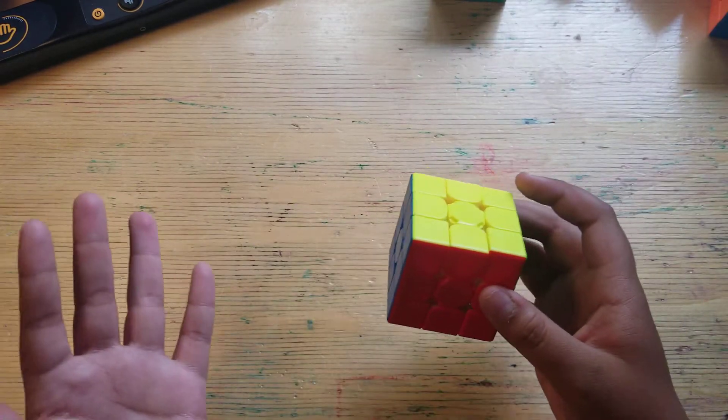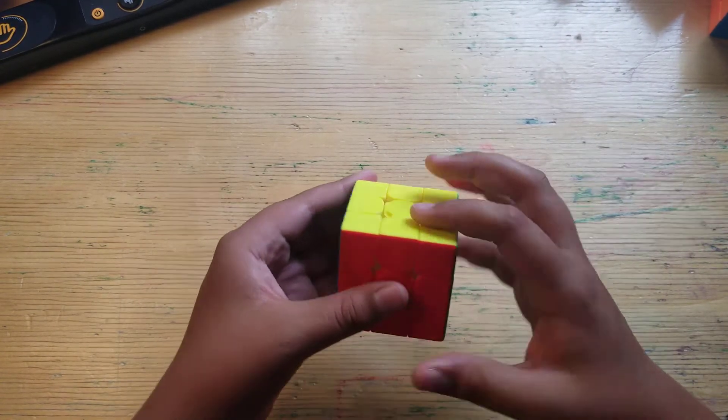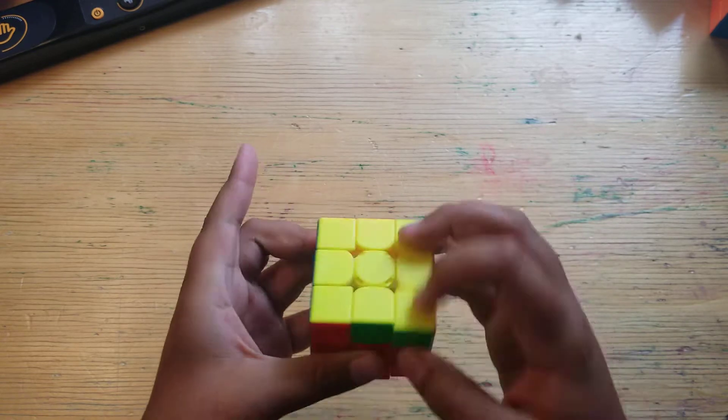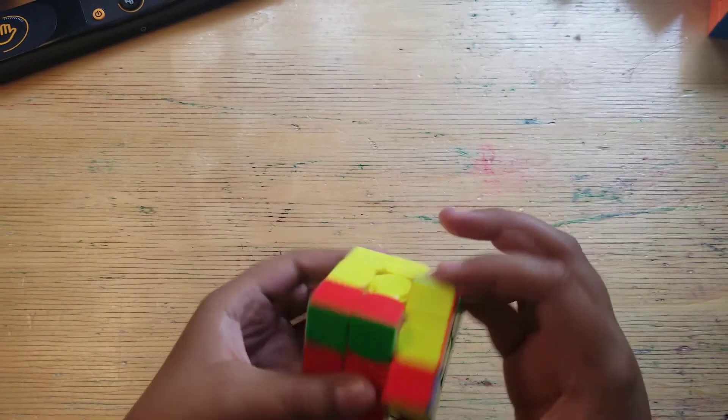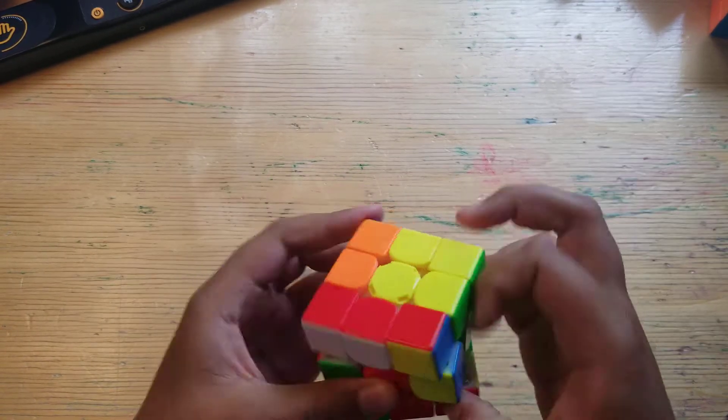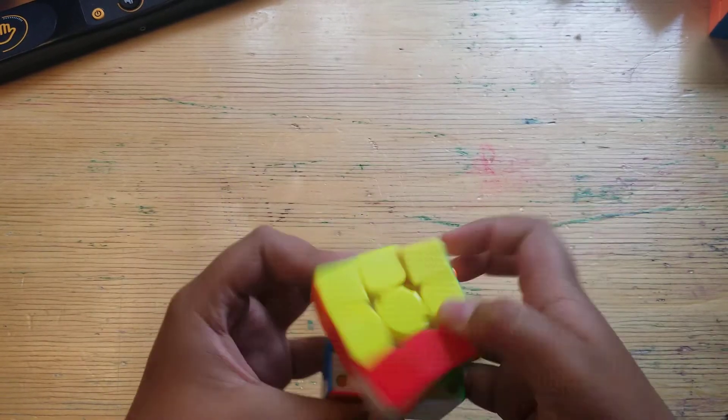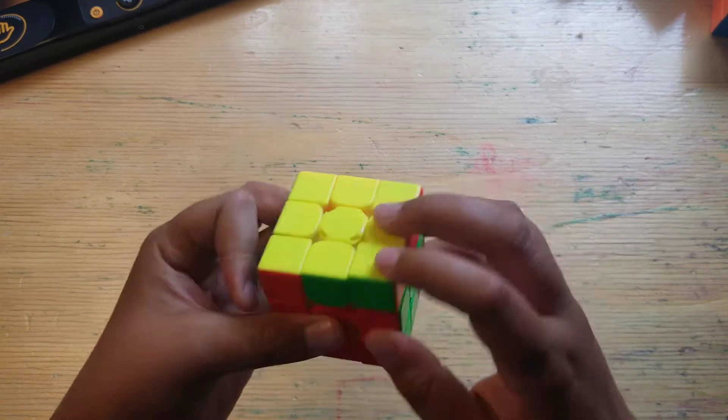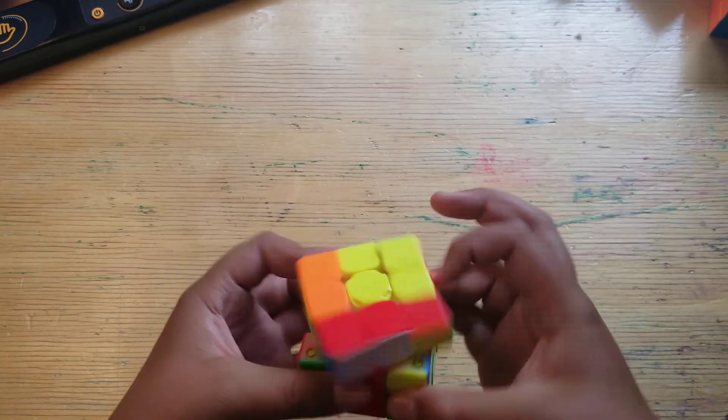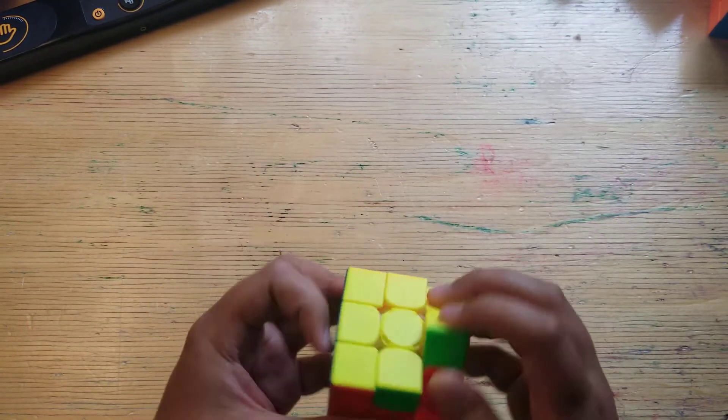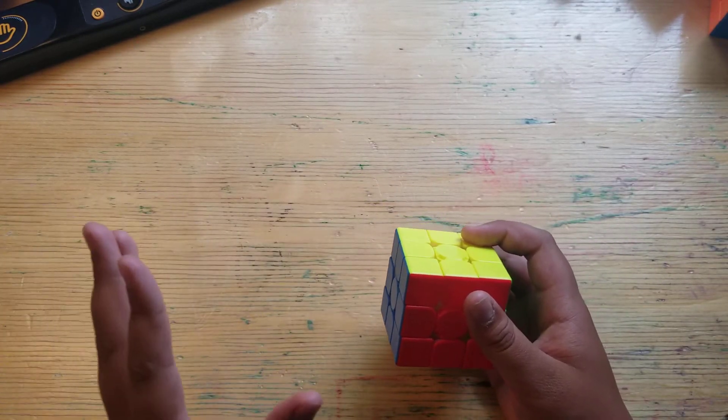Let's move on to the Gan 356i Carry. This is a smart cube that's only $37. Let's see how well it performs. Let's do some first turns. Wow, it's really cool! This actually performs really well. I really like the performance of the Gan 356i Carry. It's really smooth, fluid, and I really like the tensions.